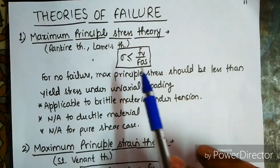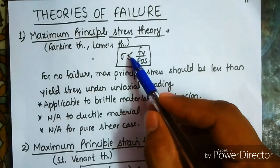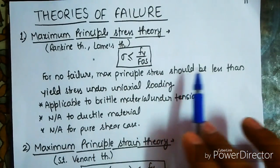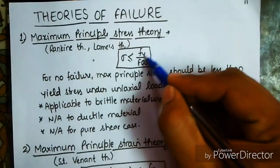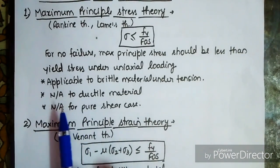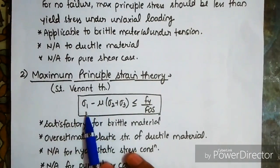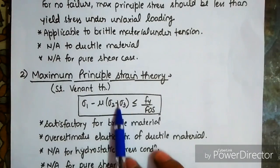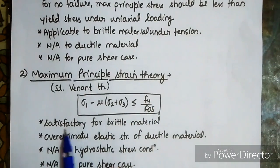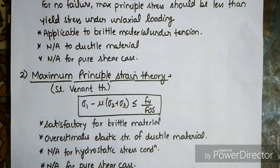Theories of failure: (1) Maximum Principal Stress Theory (Rankine/Lamy's): sigma must be less than Fy/FOS; applicable to brittle material under tension, not suitable for ductile material or pure shear. (2) Maximum Principal Strain Theory (St. Venant's): sigma-1 minus mu(sigma-2 + sigma-3) must be less than Fy/FOS; satisfactory for brittle material but overestimates elastic strength of ductile material; not applicable for hydrostatic or pure shear conditions.